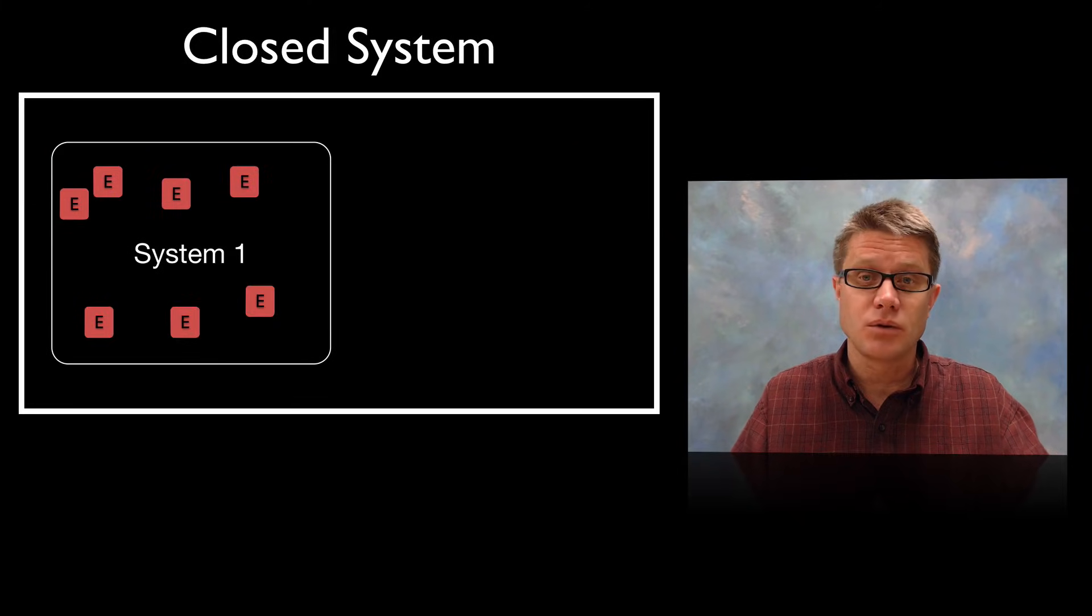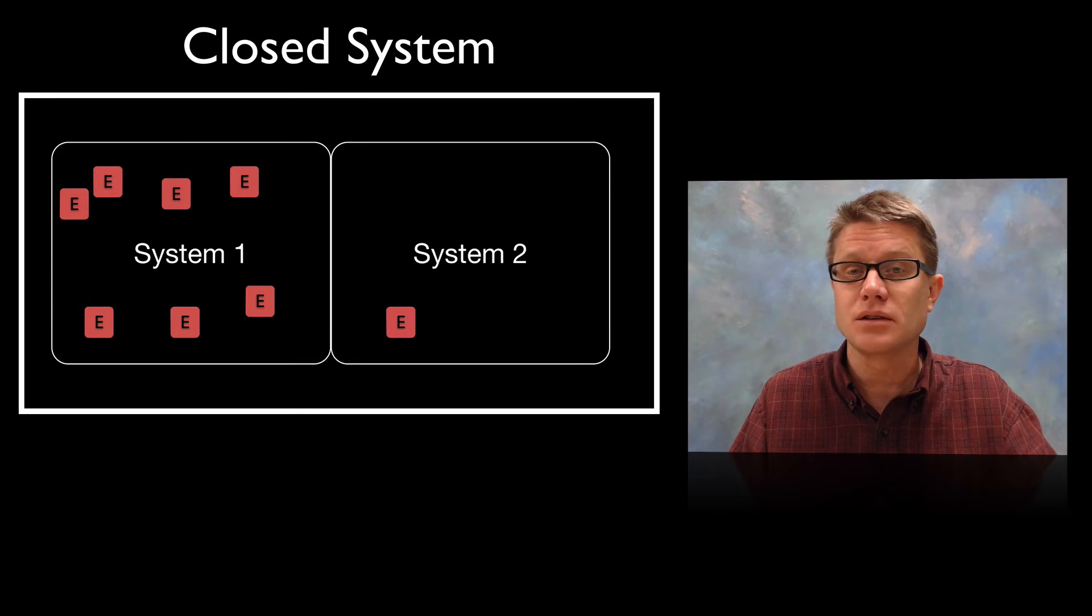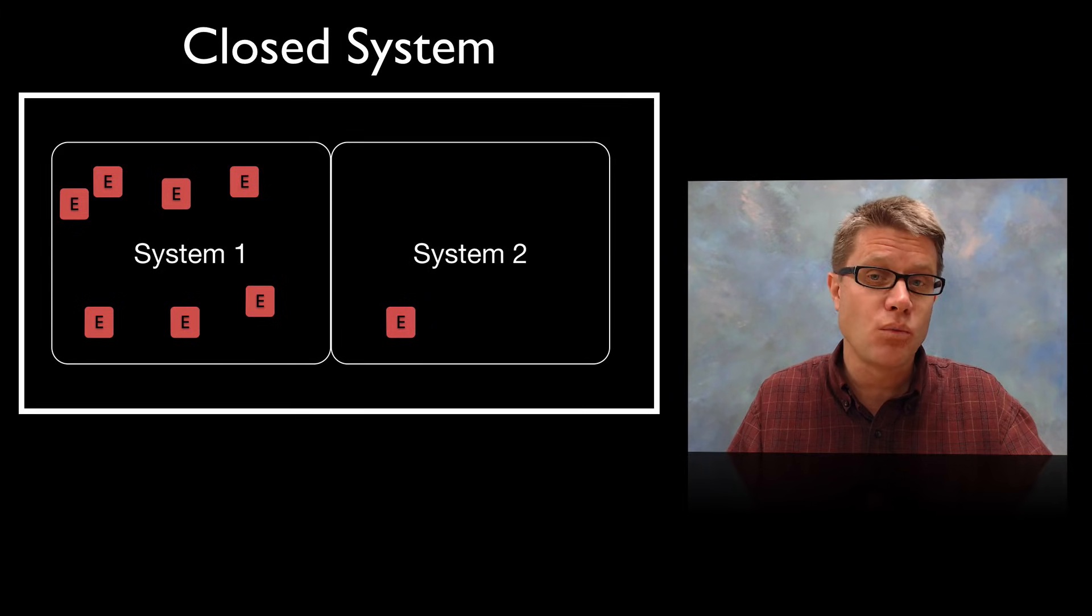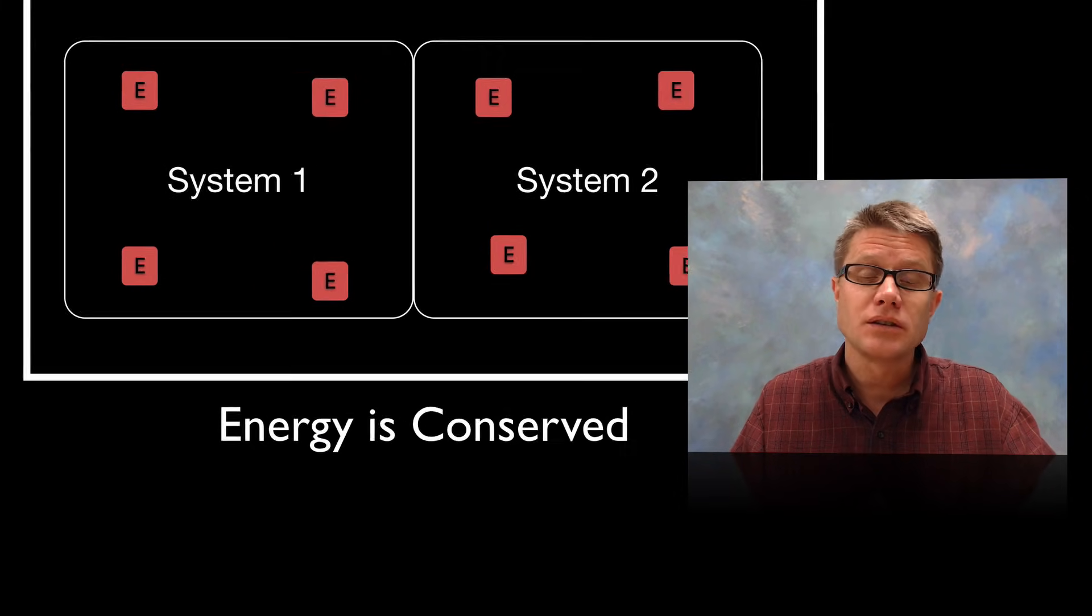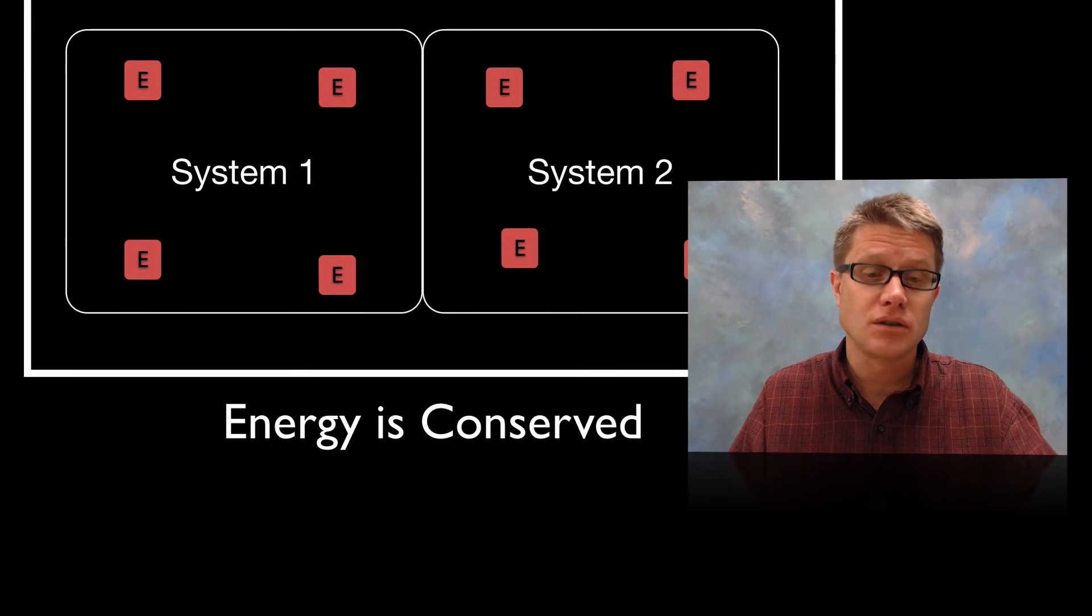In a closed system, if we're looking in isolation at these two systems, system 1 and system 2, if system 1 has more energy than system 2 then we're going to transfer that energy from 1 to 2. And so the energy is going to be conserved.